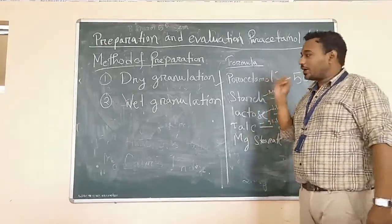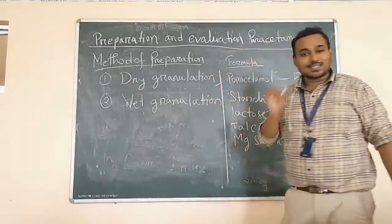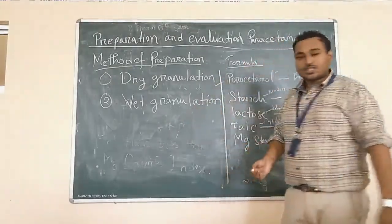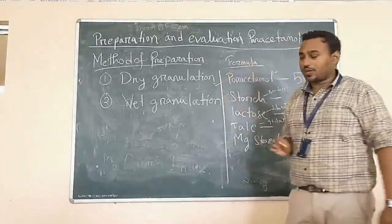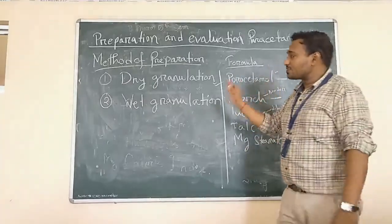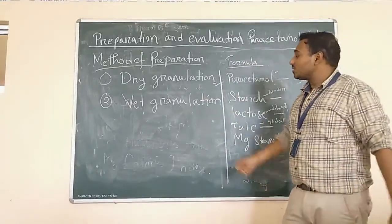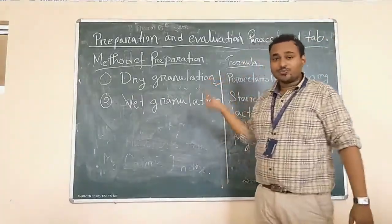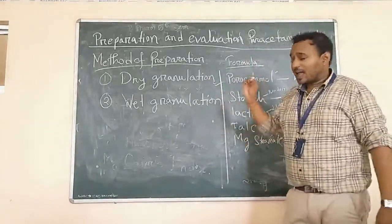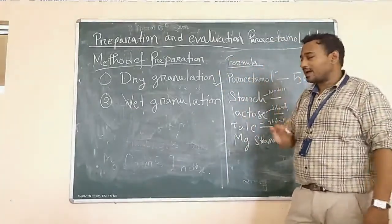We have two types of methods of preparation. One is dry granulation, that is the direct compression method, and another one is wet granulation. We have preferred the dry granulation method. The main difference between dry granulation and wet granulation is the binder. In wet granulation we use a liquid binder, and for dry granulation we use dry powdered binders.